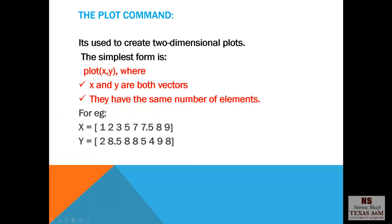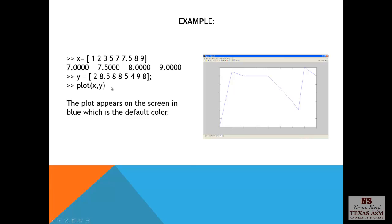How to use the plot command? You write plot where x and y are both vectors and they should have the same number of elements. Here is a plot of the data x and y. You get a solid blue line connecting all the data points. So blue is the default color.